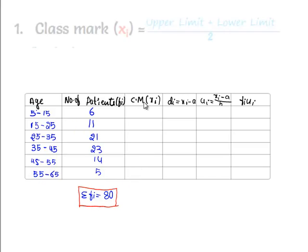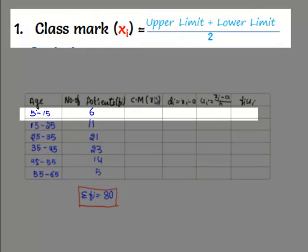Now, we have to find the class mark CM, that is Xi. It is half of the midpoint of the lower limit and upper limit. 5 plus 15 by 2 is 10.